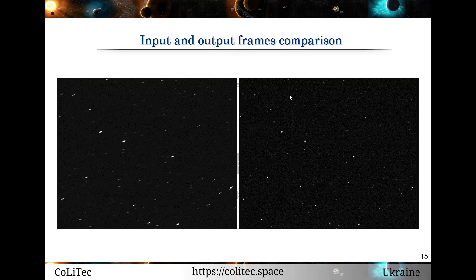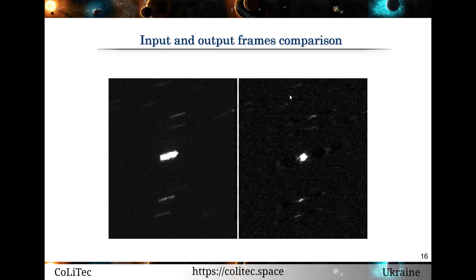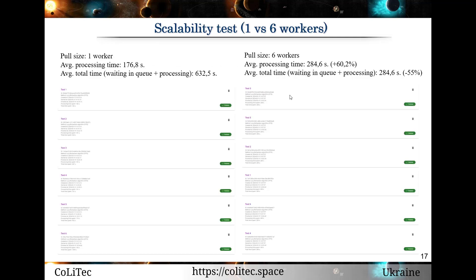The input and output frames comparison is presented in the next two slides. On the left side you will see a blurred image, and on the right side the processed result. We also performed a scalability test. As you can see, for six workers the total processing time was reduced by 55%. Testing was carried out on a machine with six cores.